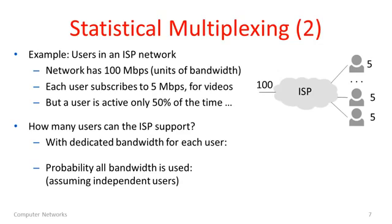What I'll do is I'll go over a simple example. This is a little bit artificial, but it's mostly to convey the point. Let's consider for a moment users in an ISP network. This network has 100 megabits per second of bandwidth to the rest of the network, the internet. Think of that as units of bandwidth. So 100 units of bandwidth.